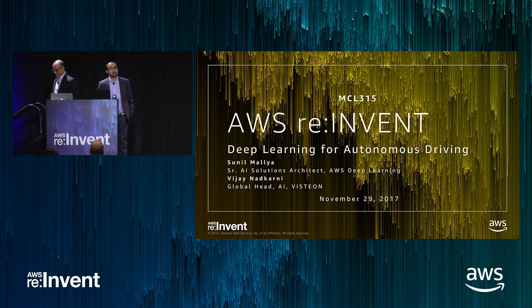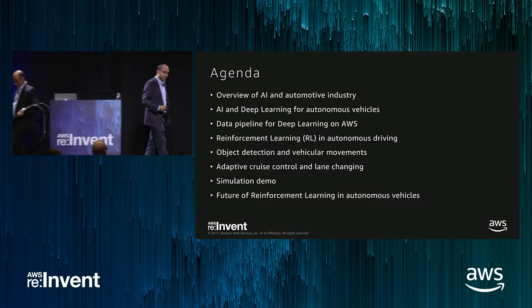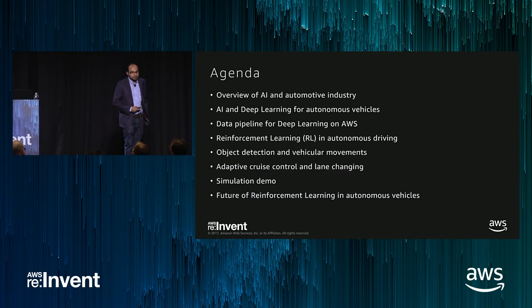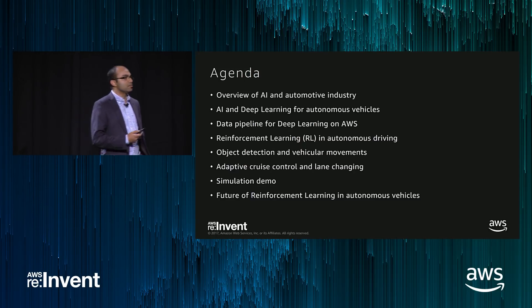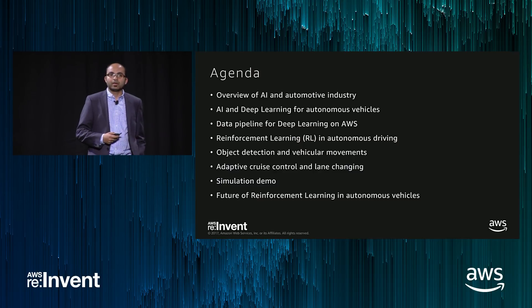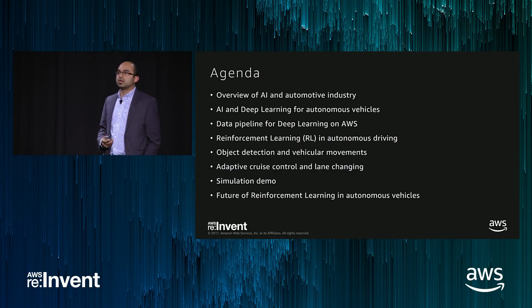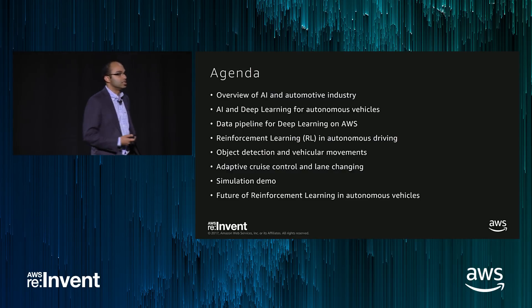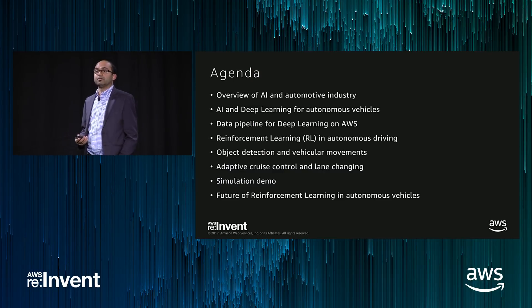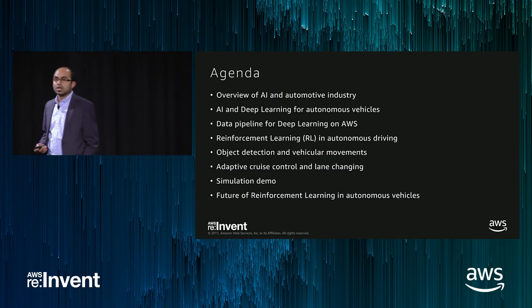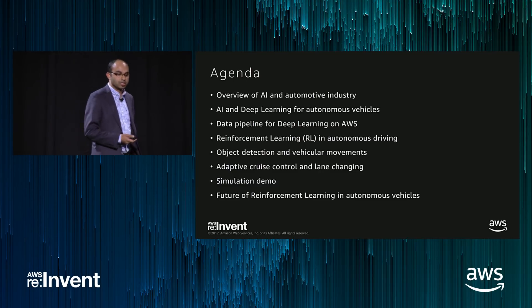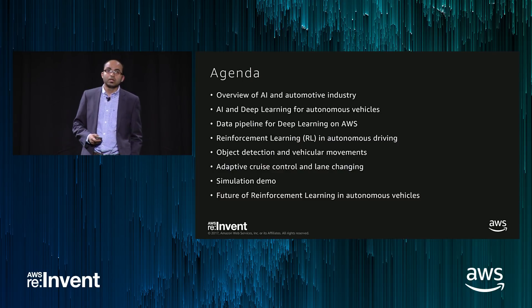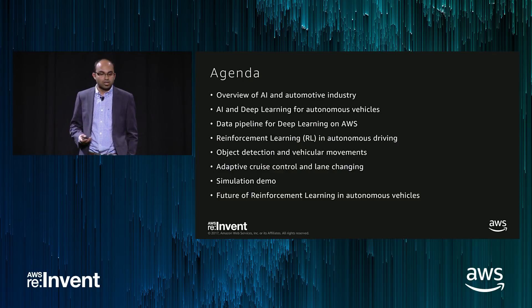I'll go through an overview of AI and the automotive industry, talk about deep learning algorithms and why deep learning is important to autonomous vehicles. We'll then cover the data pipeline, and then I'll hand over to Vijay, who will talk about advanced algorithms — reinforcement learning, object detection, maneuvers for vehicles, adaptive cruise control. We've got some fun demos lined up, a simulation, and we'll end with how the future looks for autonomous driving.